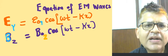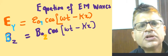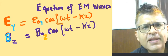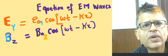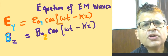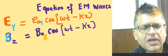These two equations together constitute the equation of an EM wave. You can be given one equation and asked to calculate the second equation. You have to use that E/B = C to find the second equation. Thank you.